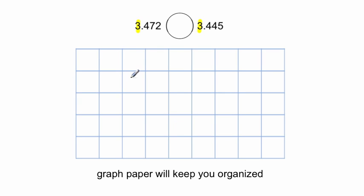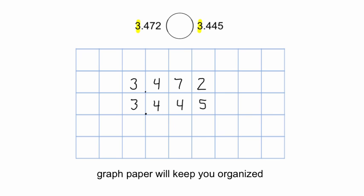Once you've identified the ones, you make sure that you stack the ones up. So I'm going to write the first number: 3.472. Then I'm going to stack this other one with the ones place right underneath it: 3.445. If you do one digit per square of your graph paper, everything should be lined up. Now we're going to be comparing. Step one: line up your decimal place, or line up all your place values — ones, tenths, hundredths, and thousandths are all lined up. Then compare them one by one from left to right, because on the left they're greater than on the right.